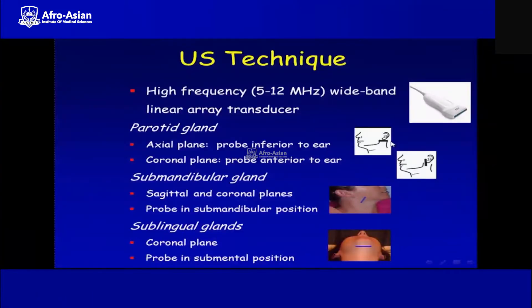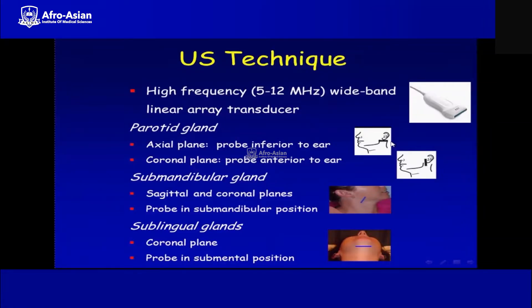For ultrasound technique, a high-frequency 5 to 12 megahertz wideband linear array transducer is used. For the parotid gland, we perform axial scanning in the axial plane with the probe inferior to the ear. You can see the probe is placed inferior to the ear. For the coronal plane, the probe is also placed inferior to the ear.